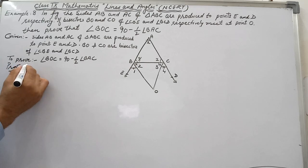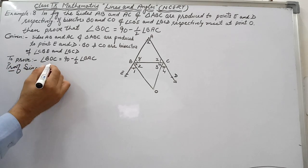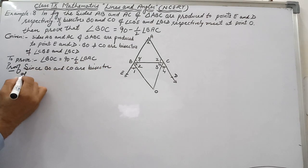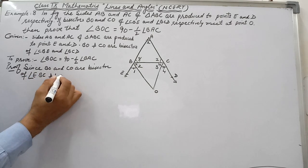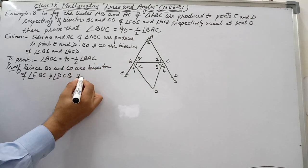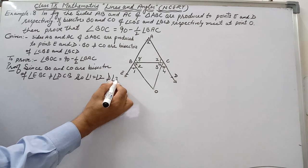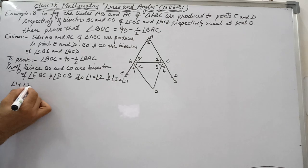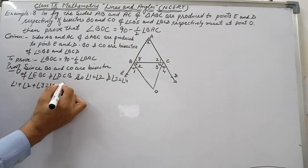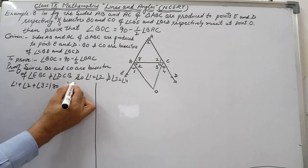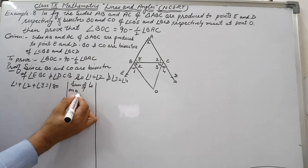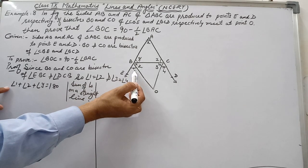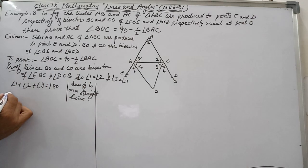In the proof, since BO and CO are bisectors of angle EBC and angle DCB, angle 1 equals angle 2 and angle 3 equals angle 4. Now we will write angle 2 in terms of Y. So angle 1 plus angle 2 plus angle Y equals 180 degrees, because these are the sum of angles on a straight line. Since angle 1 equals angle 2, I write angle 1 as angle 2.